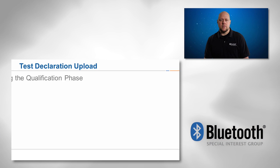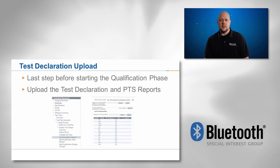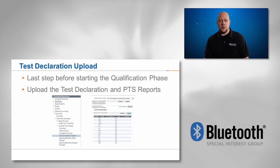The last step before moving on to the qualification and listing phase is to upload your test declaration. The test declaration is your completed test plan that tells the SIG you have passed all required tests. If you use the PTS, you can upload your test reports at this step also. Once you have uploaded your results, it is time to complete your qualification.